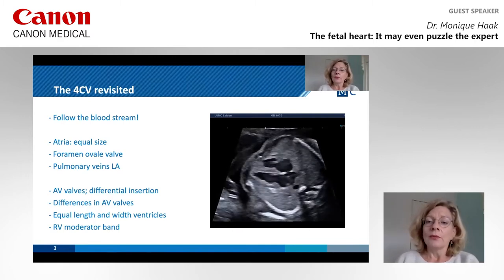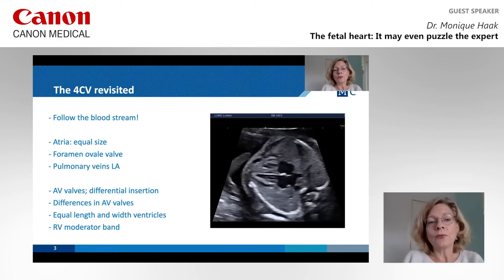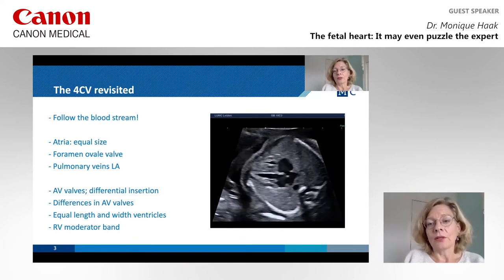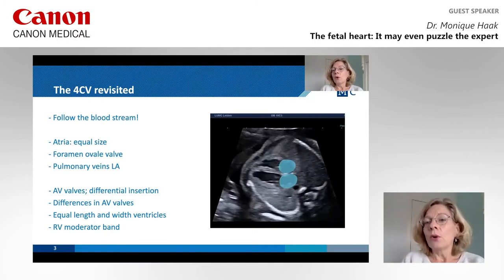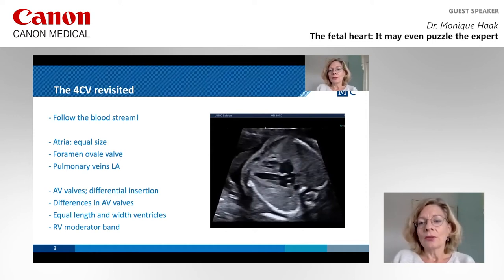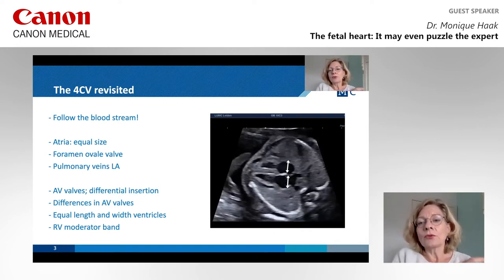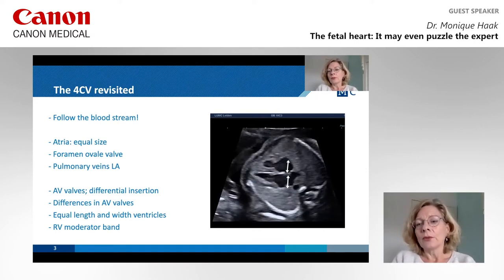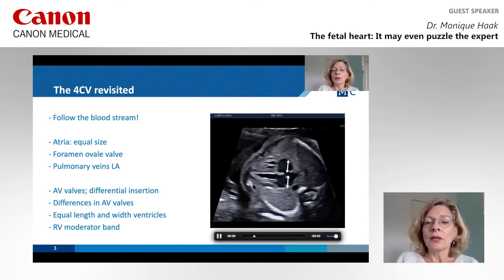If you follow the bloodstream, you won't forget the things that you have to assess. We start where the blood enters the heart — the atria. The left atrium and right atrium are globally shaped and should be more or less equal in size. To really see if they are equal in size, you can also assess the width. The width should be comparable, and no difficult turning of the probe should be needed to see them. To confirm you are in a good transverse plane through the fetal chest, check if you can really see the ribs.